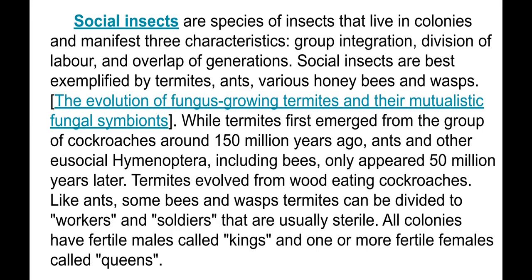Termites evolved from wood-eating cockroaches, and like ants, some bees, and wasps, termites can be divided into workers and soldiers that are usually sterile. All colonies have fertile males called kings, and one or more fertile females called queens.